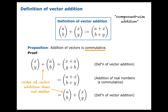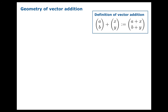It's important to notice that you might have thought this is an obvious property, but it still deserves proof — you need to verify this. It doesn't just happen automatically. It happens in this case because we're exploiting the properties of real numbers at the level of each component, and so vector addition does in fact become commutative.